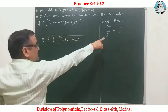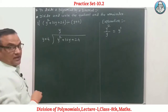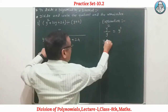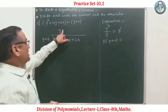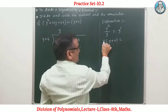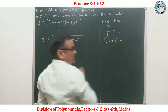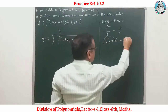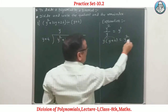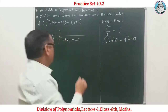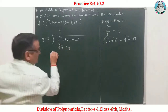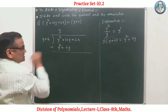This is the divisor y. We divide y² by y — y cancels, giving y. Then multiply: y multiplied by y gives y², and y multiplied by 4 gives 4y. So y times (y + 4) gives y² + 4y. Now perform subtraction.